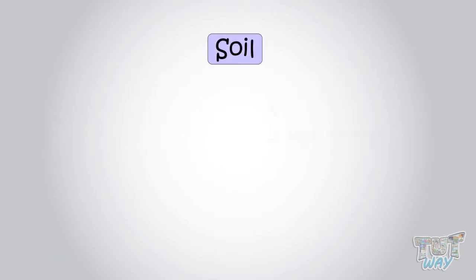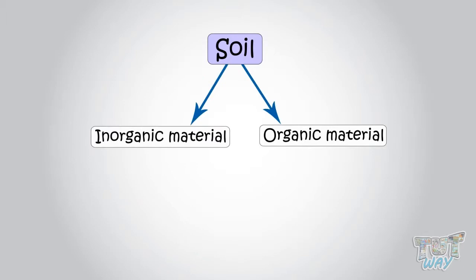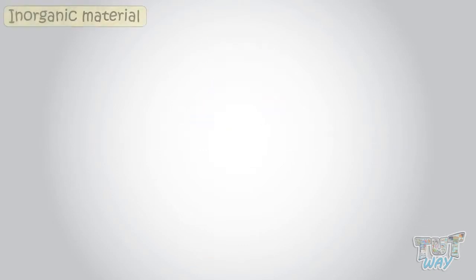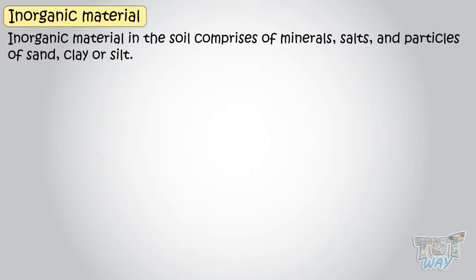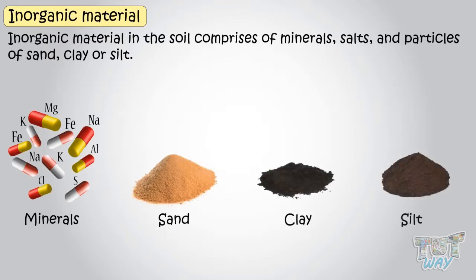Soil is made up of organic and inorganic materials. Let's first see where this inorganic material comes from. Inorganic material in the soil comprises of minerals, salts, and particles of sand, clay, or silt.